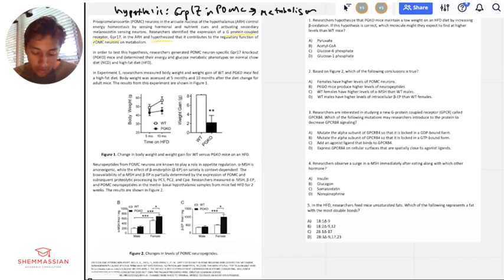Anytime you hear hypothesis, I usually think that's pretty important. So let's draw out the logic of their hypothesis. They're basically saying that these GPR17 and POMC are going to contribute to metabolism. In order to test this hypothesis, researchers generated POMC neuron specific GPR17 knockouts, PGKO mice, and determined their energy and glucose metabolic phenotypes. Those look like our dependent variables. On normal chow diet and a high fat diet - those are independent variables, right?